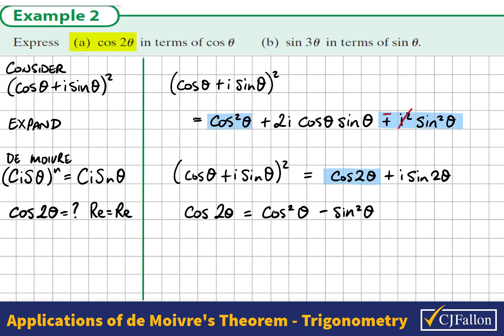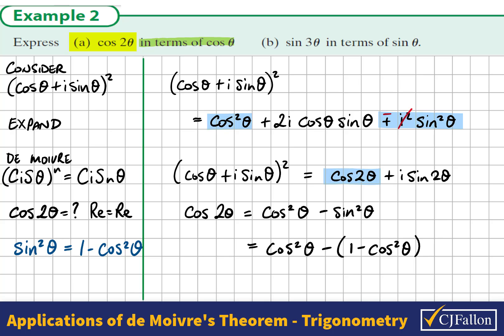Therefore cos2θ must be equal to cos²θ minus sin²θ. In this question we are asked to express cos2θ in terms of cosθ only. So we want to replace the sin²θ term. We know that sin²θ equals 1 minus cos²θ, so we replace sin²θ with this expression. Simplifying, we get 2cos²θ minus 1, and that is our solution.